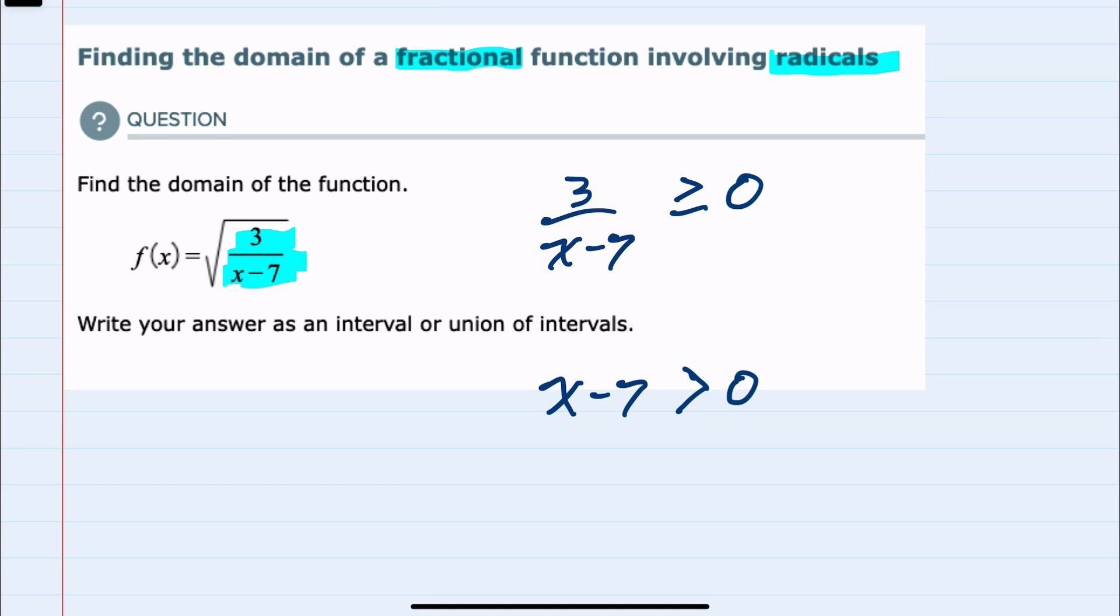And notice that I dropped the or equal to, because in a fraction our denominator can't be equal to 0, so our x minus 7 will just be greater than 0.